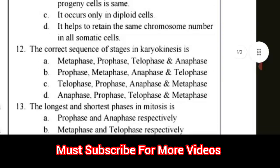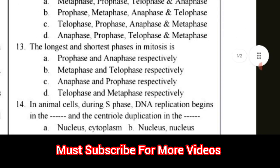Question number 12: The correct sequence of stages in karyokinesis is? The correct answer is option B — prophase, metaphase, anaphase, and telophase. Question number 13: The longest and shortest phase in mitosis is? The correct answer for question number 13 is option A — prophase and anaphase respectively. That means the longest phase is prophase and the shortest phase is anaphase.